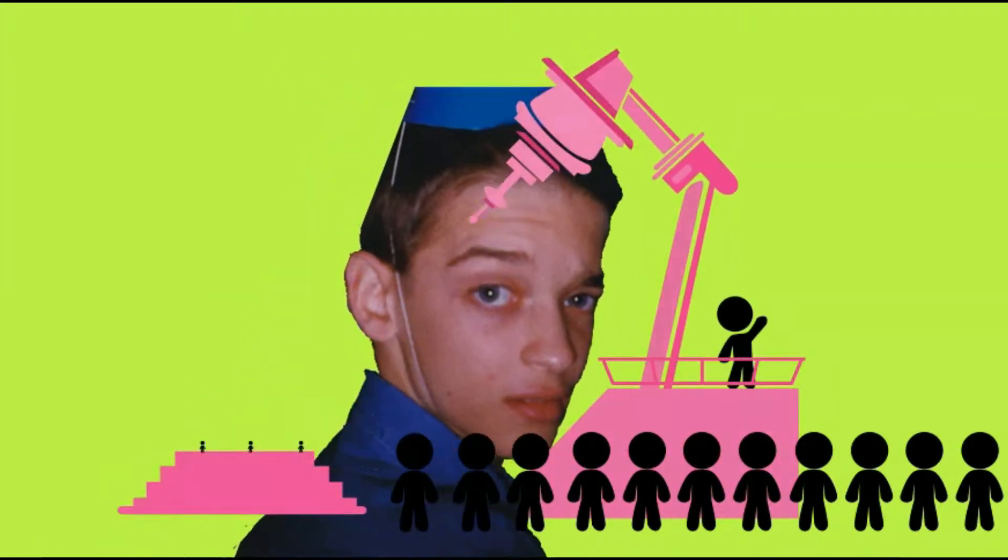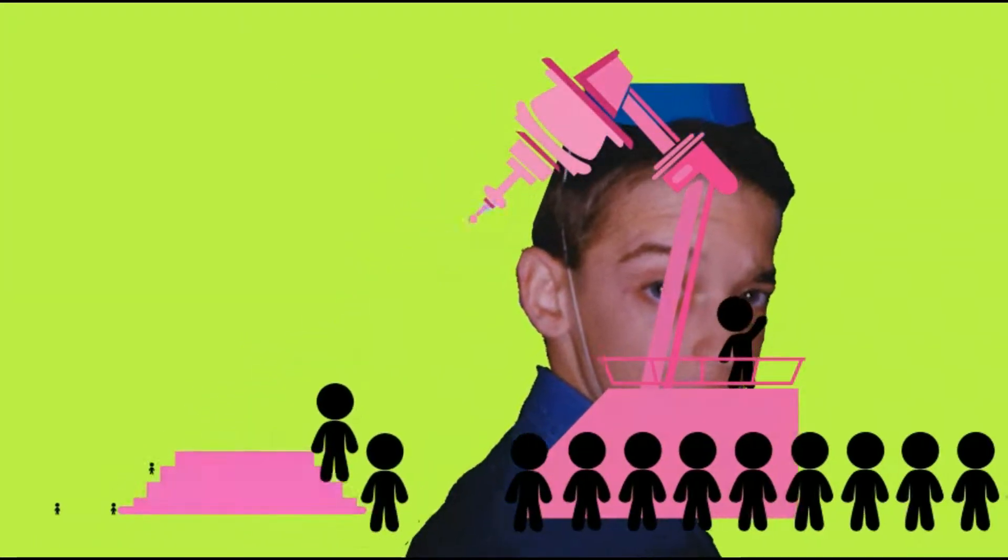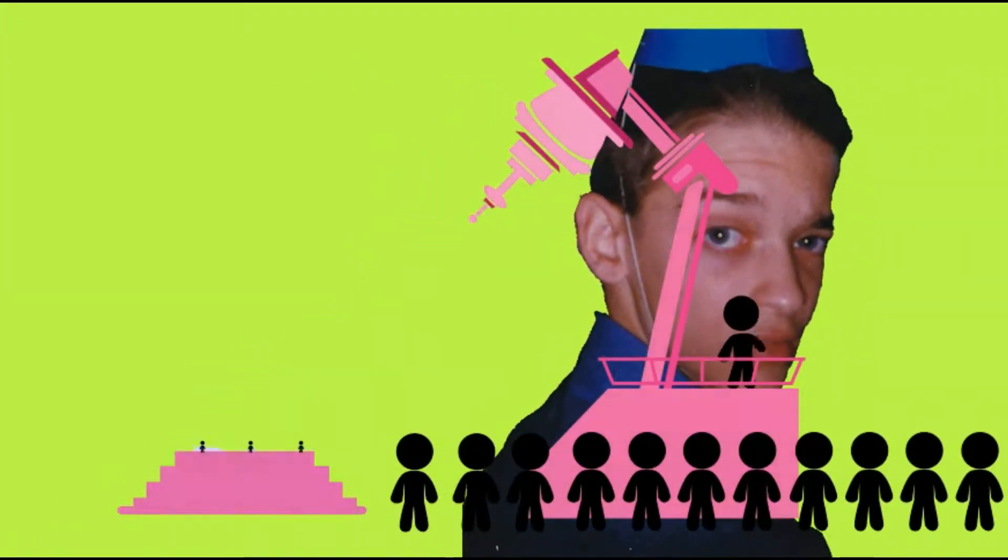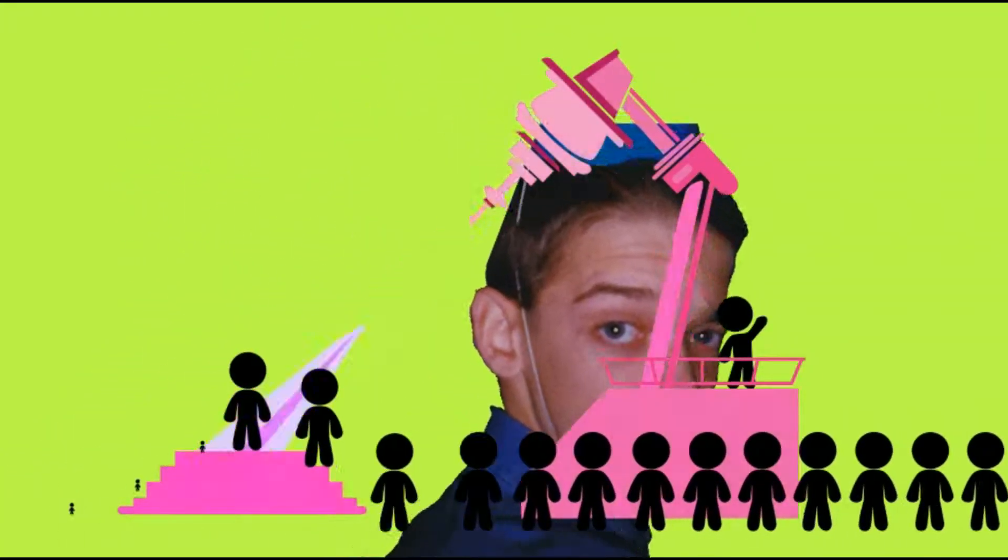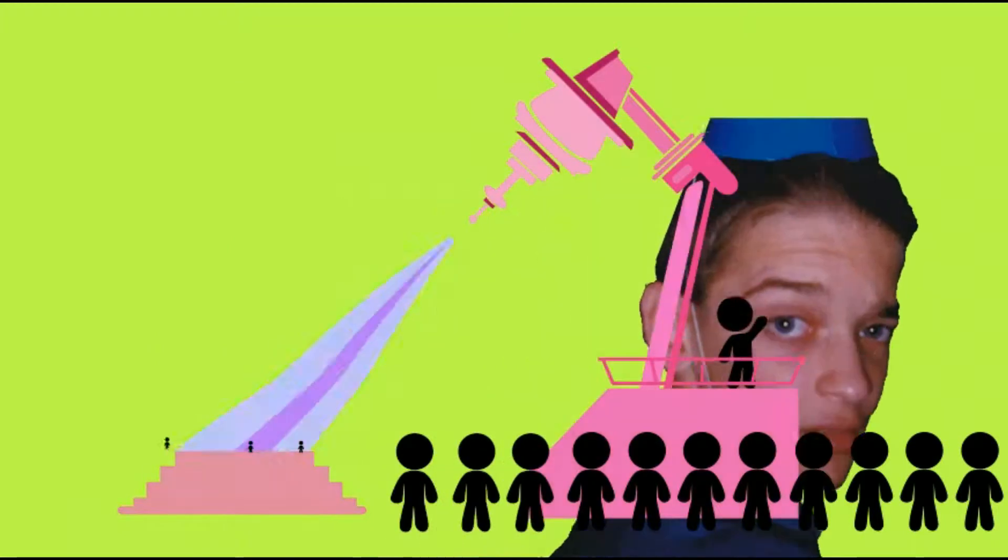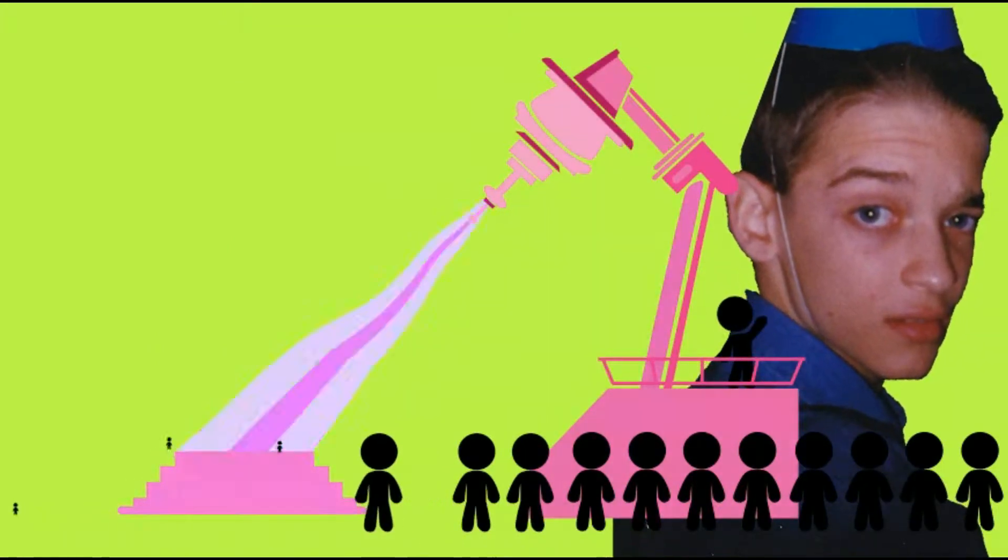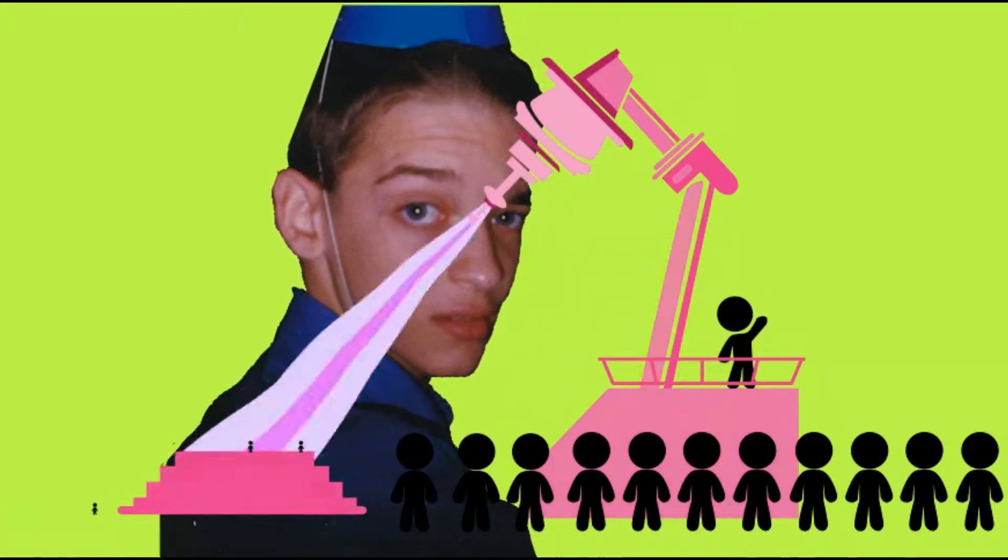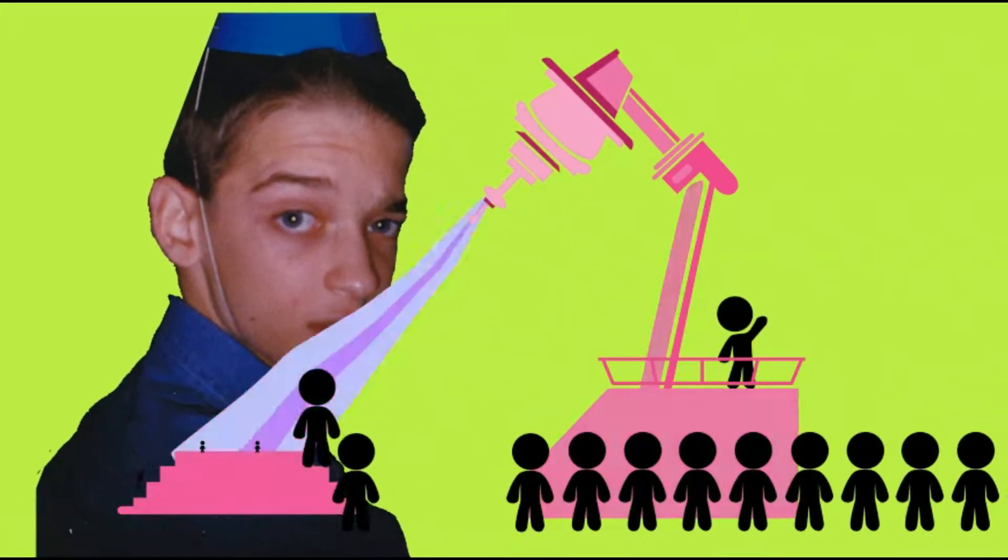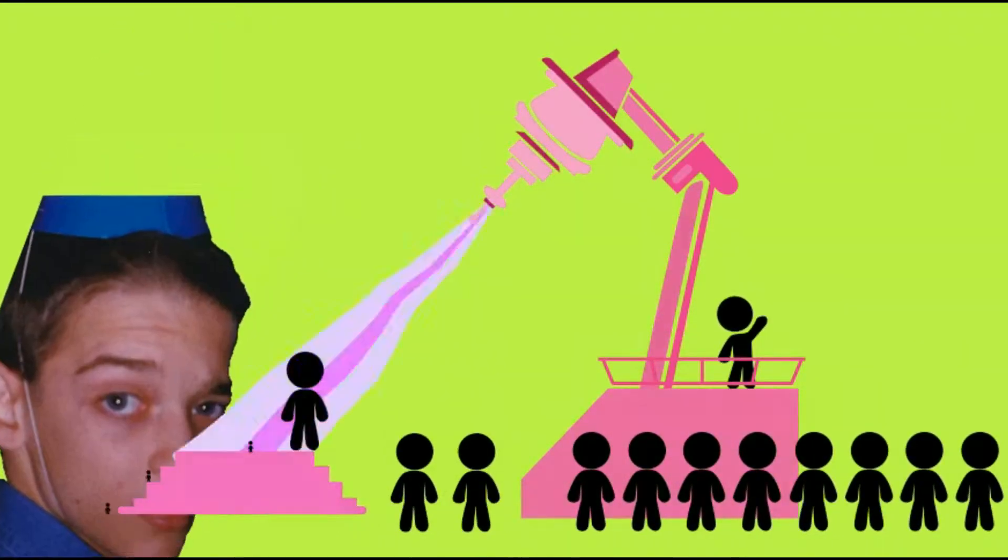It is written: and after these things I saw four angels standing on the four corners of the earth, holding the four winds of the earth that the wind should not blow on the earth nor on the sea nor on any tree. And I saw another angel ascending from the east having the seal of the living God.